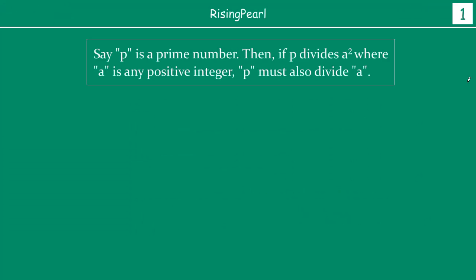Now the theorem goes like this. Say p is a prime number — any prime number — then if p divides a squared, where a is any positive integer, then p absolutely must divide a. Now I know it just sounds like a lot of things going on, but really simply put, what it says is: think about a as any positive integer.